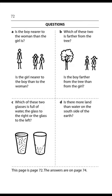Page 72. Questions. Is the boy nearer to the woman than the girl is? No. The girl is nearer to the woman. Is the girl nearer to the boy than to the woman? Yes. The girl is nearer to the boy than to the woman. Which of these two is farther from the tree? The girl is farther from the tree. Is the boy farther from the tree than from the girl? Yes. Which of these two glasses is full of water, the glass to the right or the glass to the left? The glass to the left is full of water. Is there more land than water on the south side of the earth? No. There is more water than land on the south side of the earth.